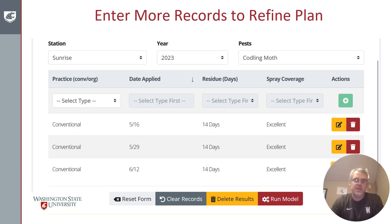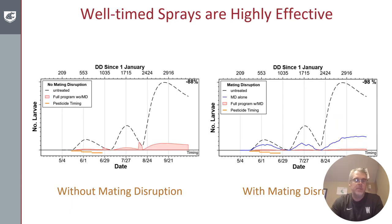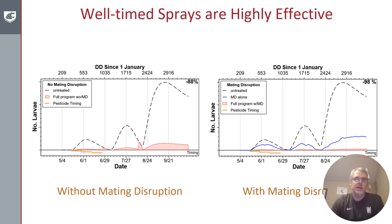Users can then go back and enter more records to refine their plan. I've added two additional sprays about two weeks after my first spray and four weeks after my first spray. Running the model again, my plan is now reducing the codling moth population by 88% without mating disruption or 98% with mating disruption. As this is a forecasting tool, it will get better and better as the date approaches and weather forecasts become refined. We hope growers can use this to plan in advance when sprays might need to occur and make sure they have appropriate insecticide inventory on hand at the right time and location.